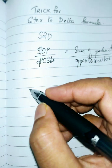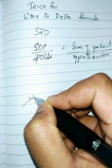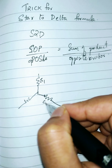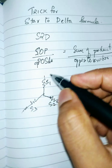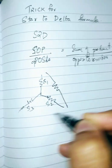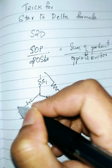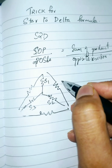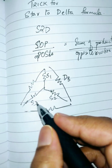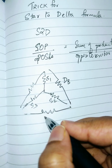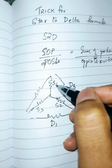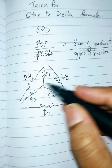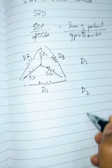You are given a star-connected circuit with resistors S1, S2, and S3. You have to get a delta formation. In the delta, the branch between S1 and S2 will have resistor D3; the branch between S2 and S3 will have D1; and the branch between S1 and S3 will have D2.